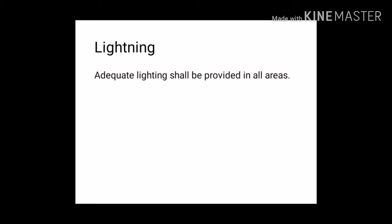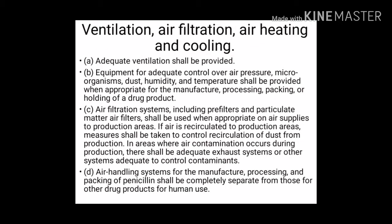Adequate lighting shall be provided in all areas. Adequate ventilation shall be provided, and equipment for adequate control over air pressure, microorganisms, dust, humidity, and temperature shall be provided when appropriate for the manufacture, processing, packing, or holding of a drug product. Air filtration systems including pre-filters and particulate matter air filters shall be used when appropriate on air supplies to production areas. If air is recirculated to production areas, measures shall be taken to control recirculation of dust; where air contamination occurs during production, there shall be adequate exhaust systems to control contaminants.